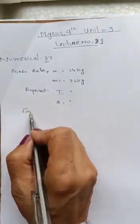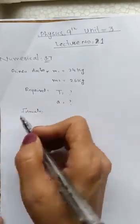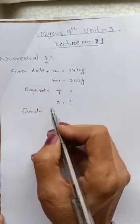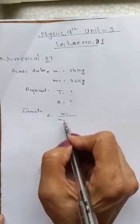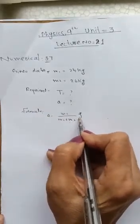First of all, we have to find the formula. A equals m1 divided by m1 plus m2 into g.